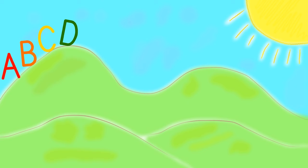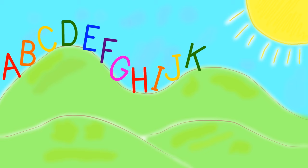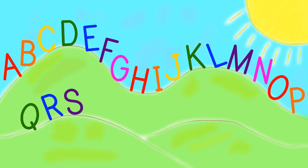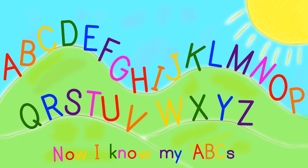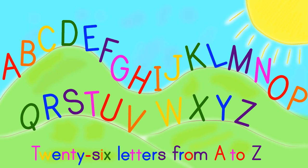A, B, C, D, E, F, G, H, I, J, K, L, M, N, O, P, Q, R, S, T, U, V, W, X, Y, and Z. Now I know my A, B, C, 26 letters from A to Z.